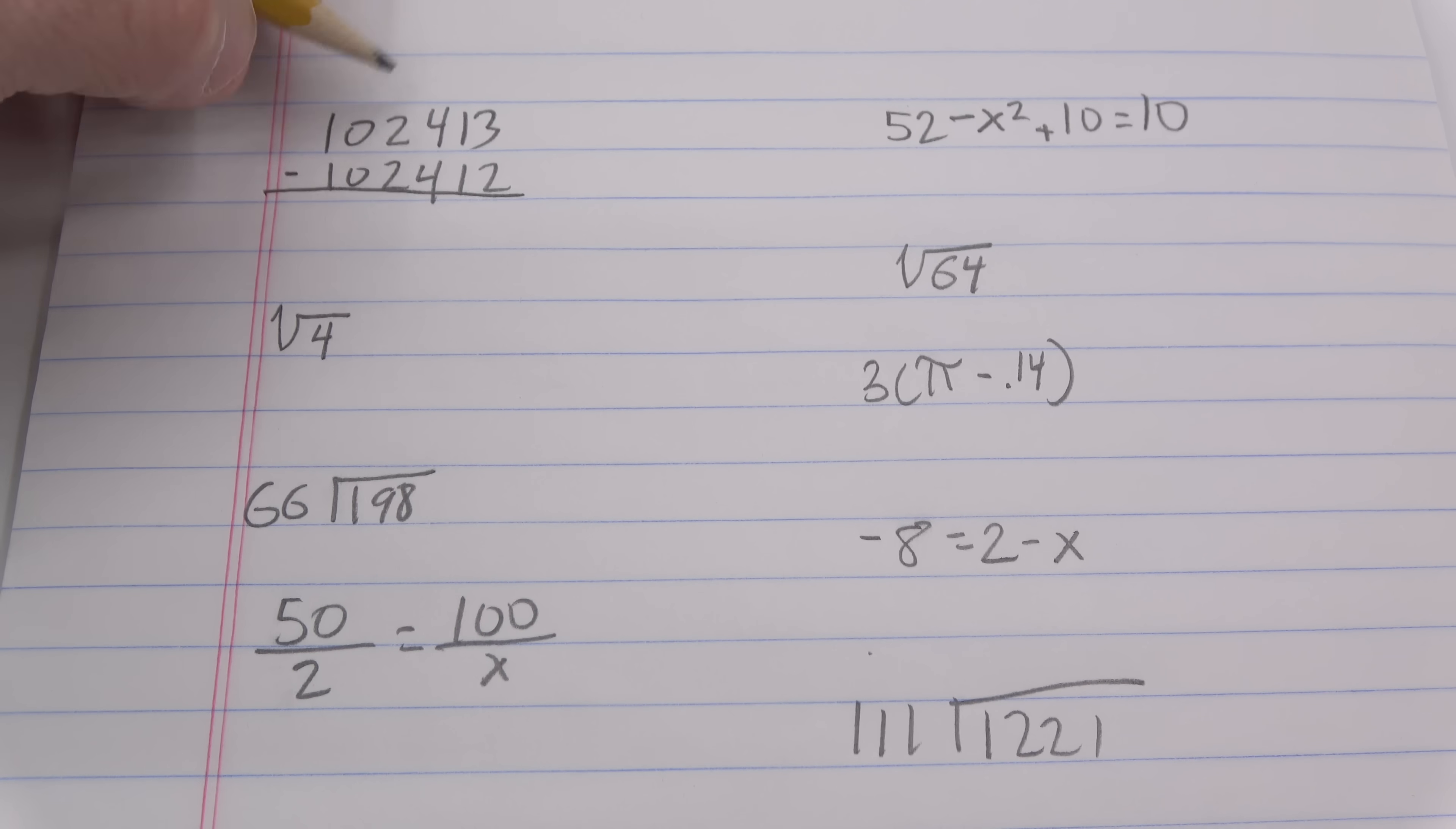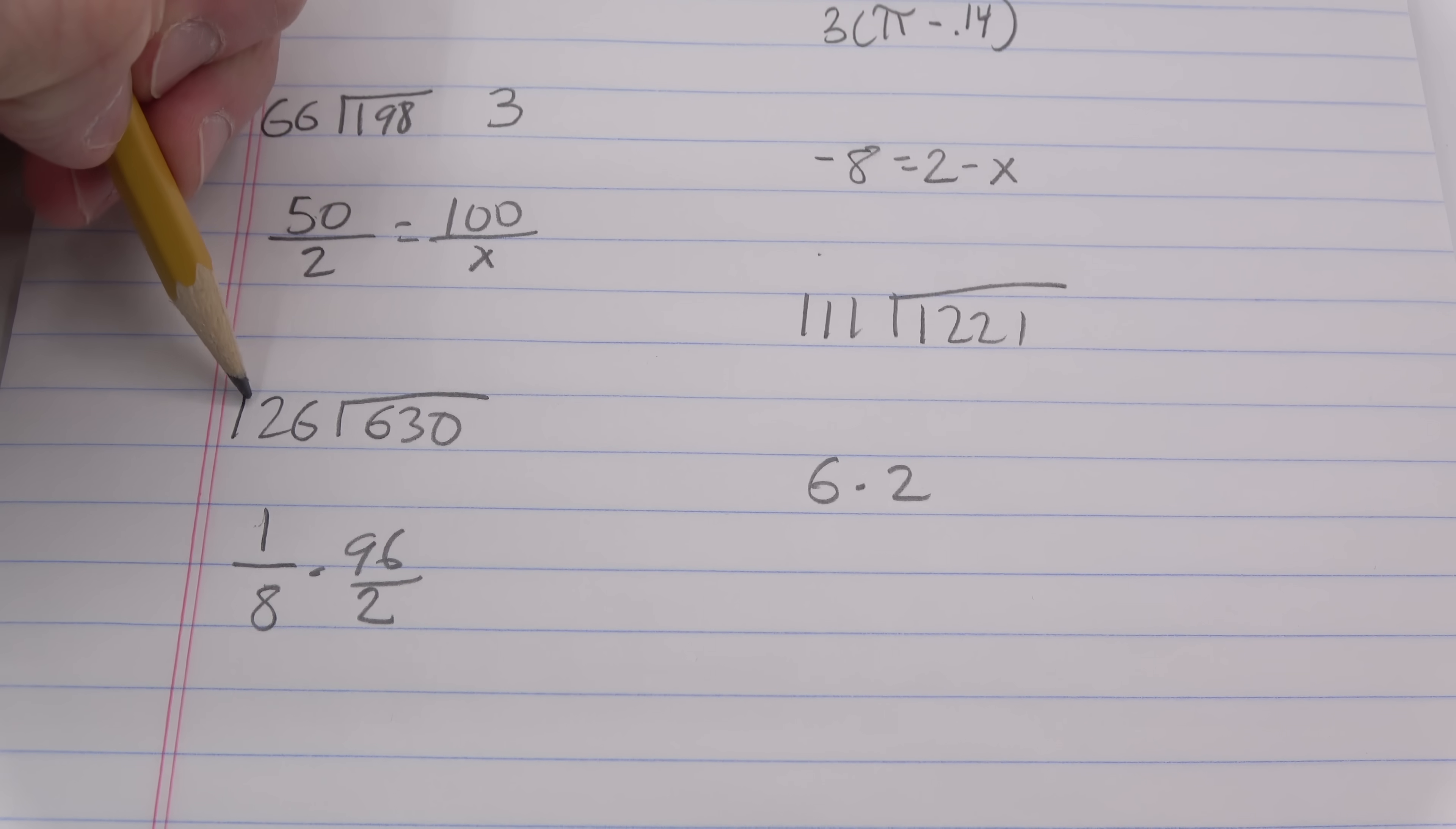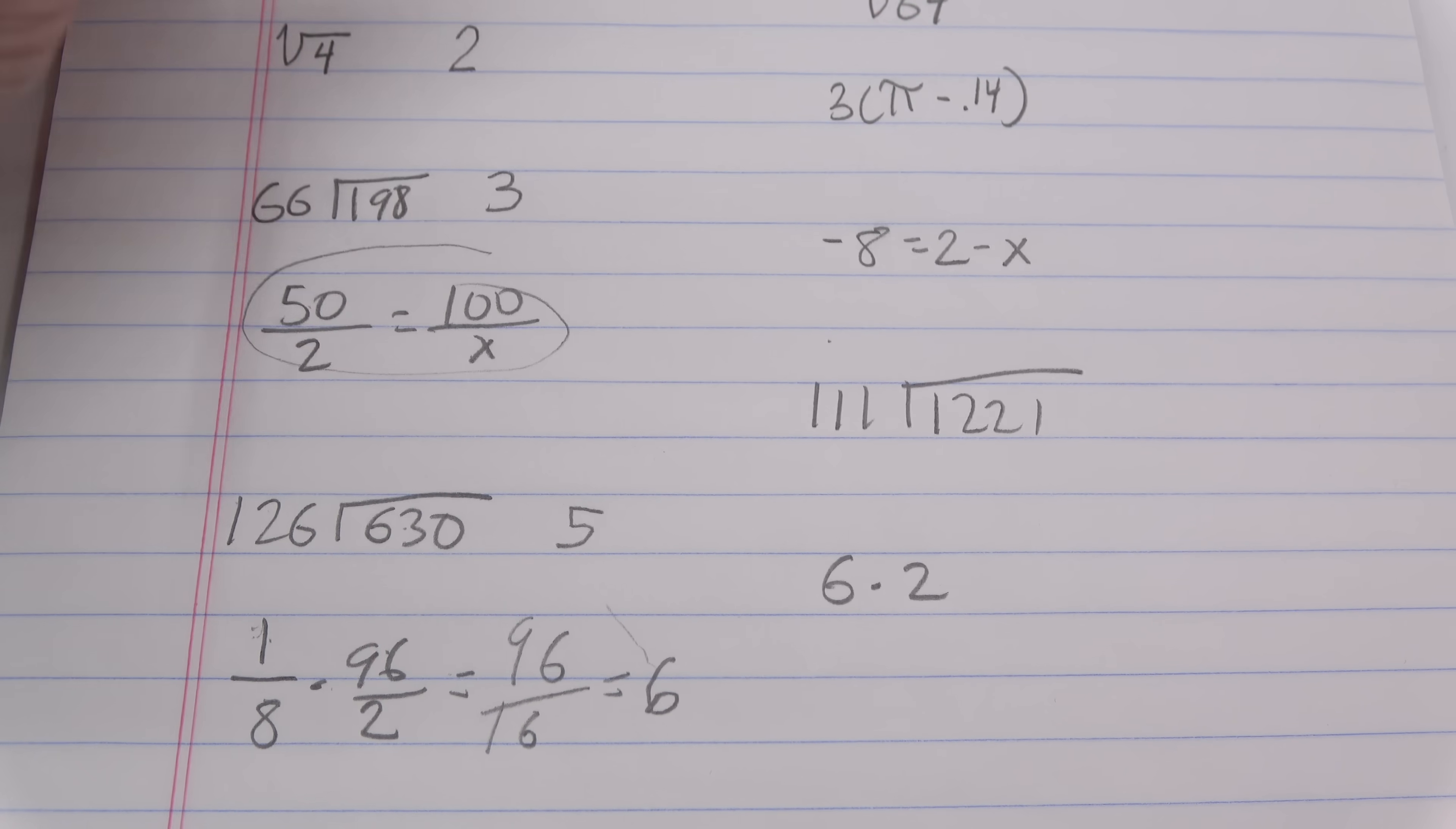I'll shoot through, obviously, I mean subtraction. This one is 1. This sign, square root of 4, radical 4, rad 4, it means what times what equals 4. The answer to that obviously is 2. Simple division, 66 into 198 is 3. Let's skip over this one for a second. 630 divided by 126, you could do the long division if you want, but it's clearly 5. This guy, we have to multiply two fractions, so this would be 96 over 16, and that's 6.